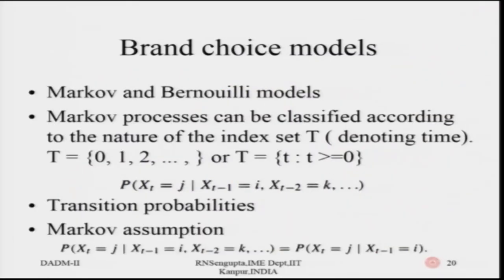Next, we move to another set of models known as brand choice models, which are very widely utilized in marketing literature and applications. These are based on Markov and Bernoulli models. If there are more than one brand in the market — for example, Pepsi, Coke, Miranda — how do you judge which brand is going to be preferred by a consumer or a segment of consumers? This will help you plan your marketing strategy so that you become the preferred brand choice, because it is linked to your revenues and market share. It is very important for a firm to understand the preferences of customers so it can modify its offerings or use marketing to influence customer decision making.